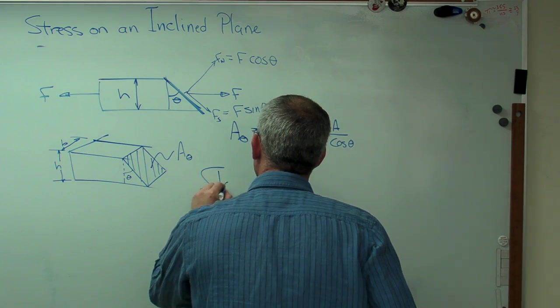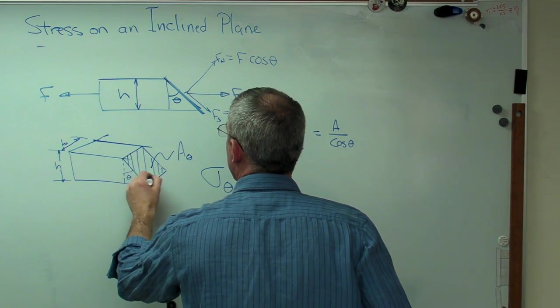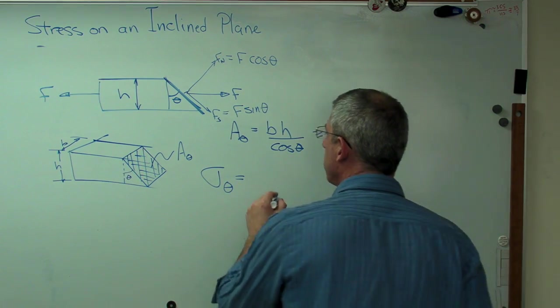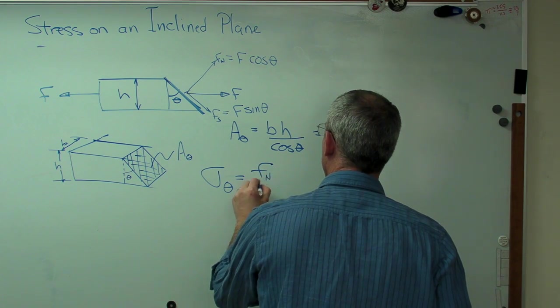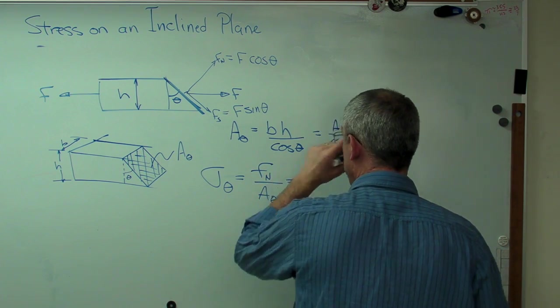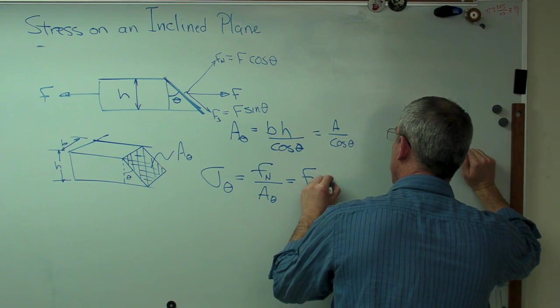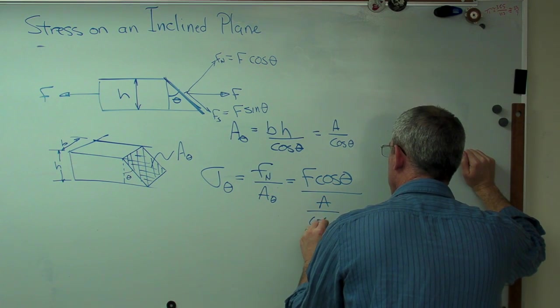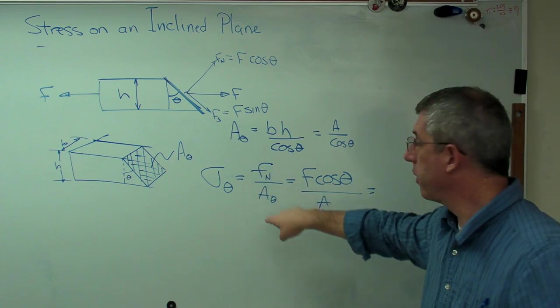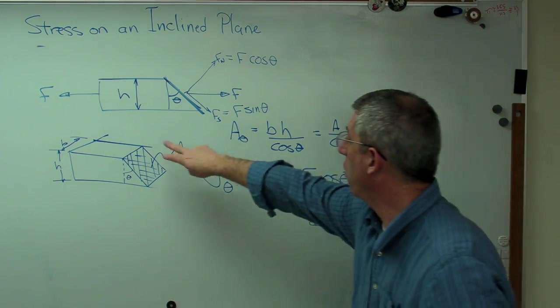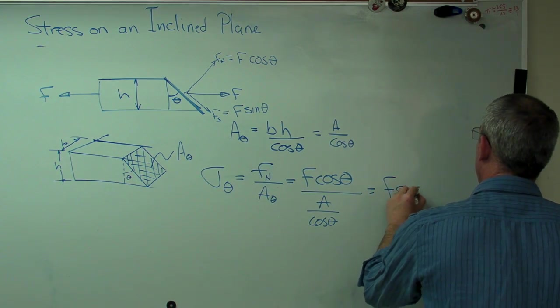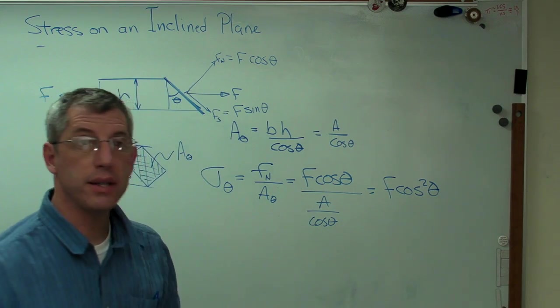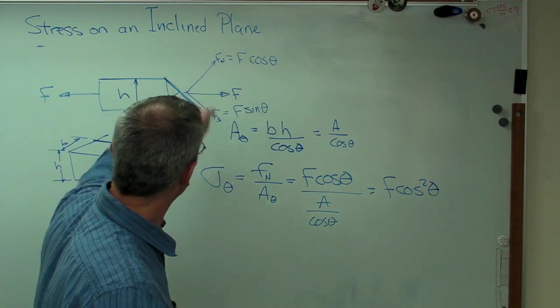So if I want to find the normal stress on this face here, I'm going to call that sigma theta, which is normal stress on that angled face. I want F normal over A theta. Well, that's going to be F cosine theta divided by A over cosine theta. So that's just a normal force divided by that angled area there. Well, that looks like F over A cosine squared theta to me. That's the normal stress on that angled face.